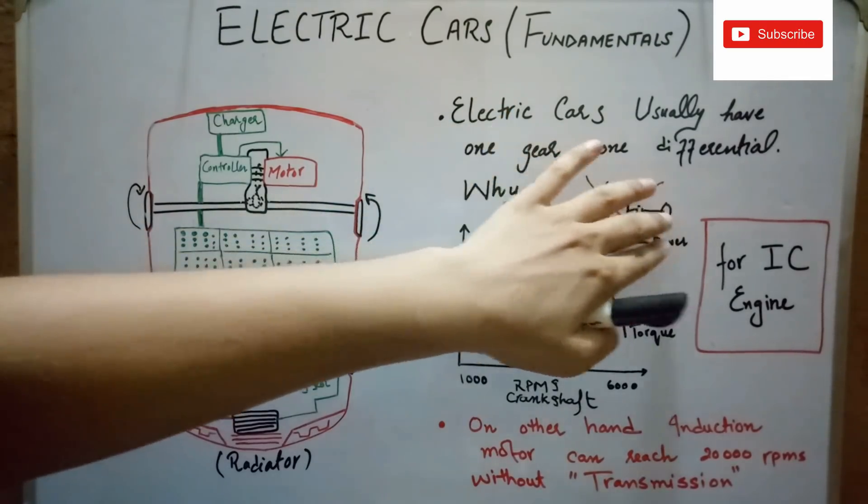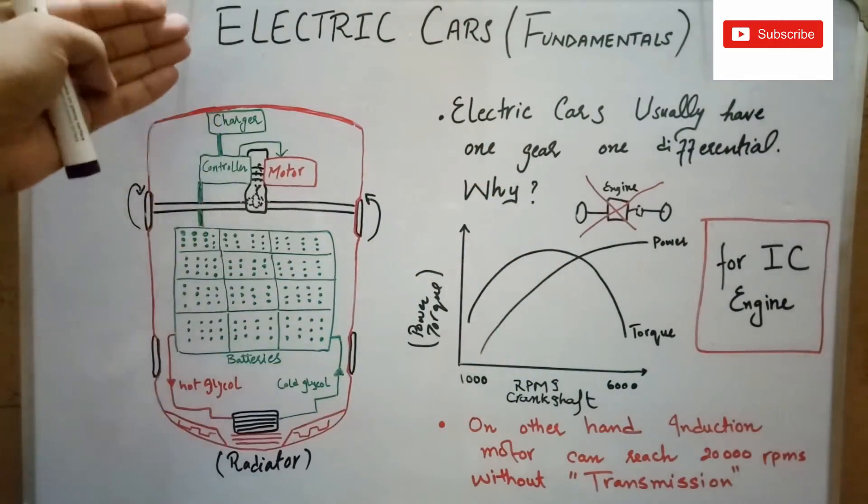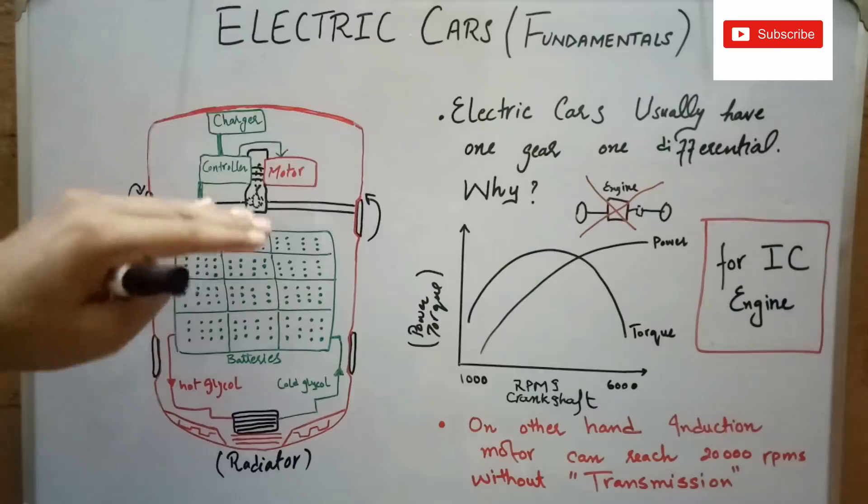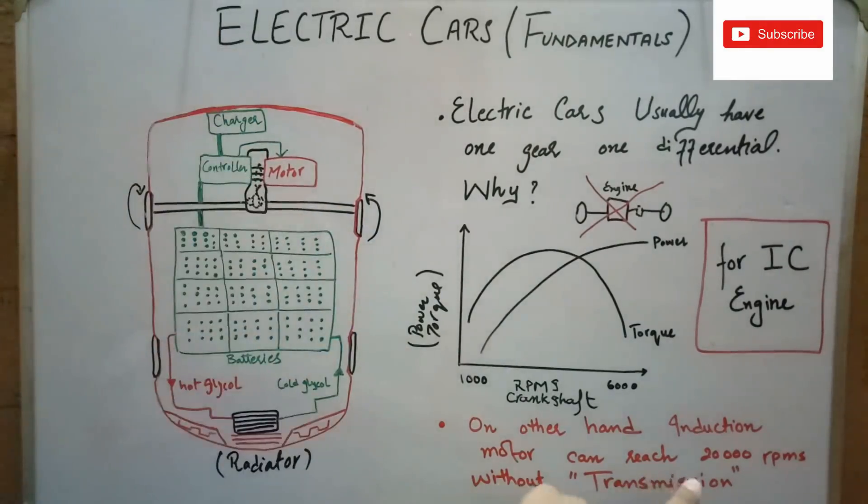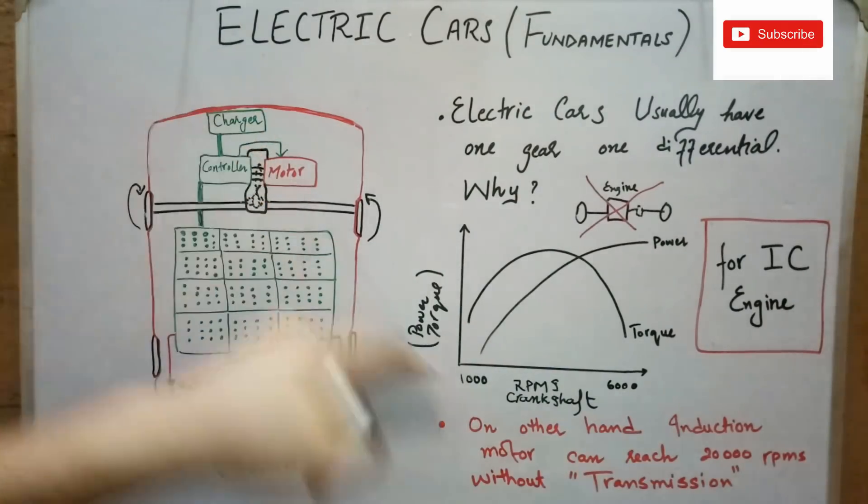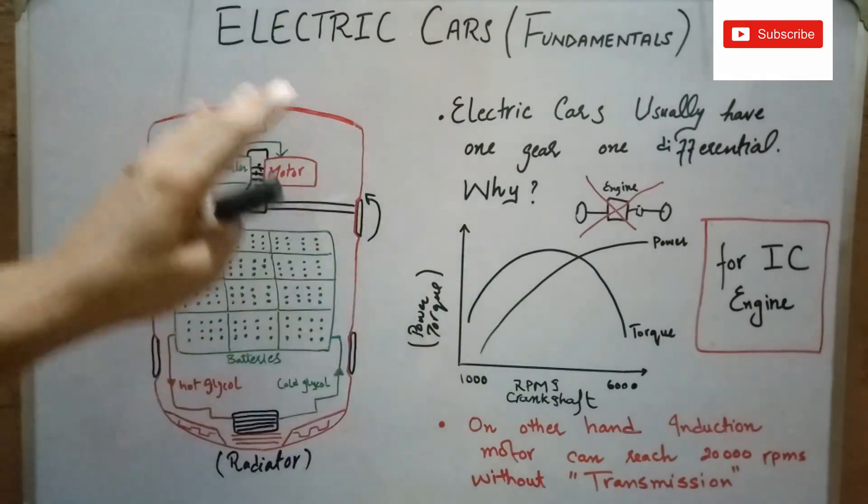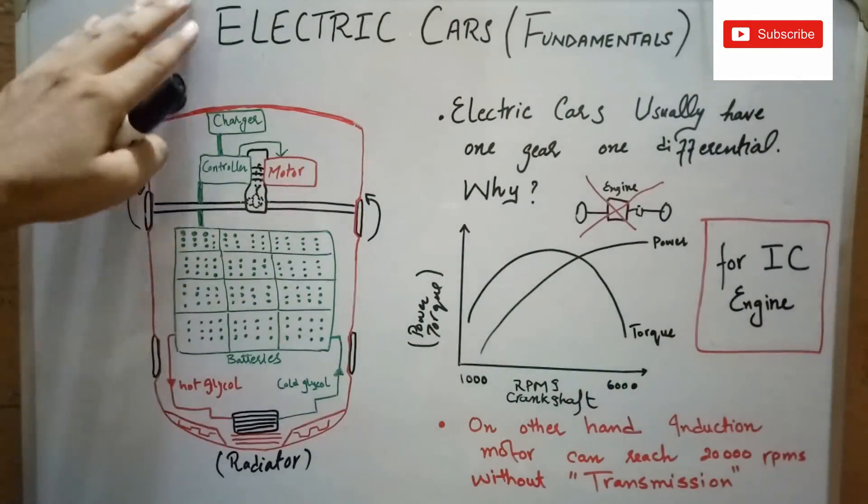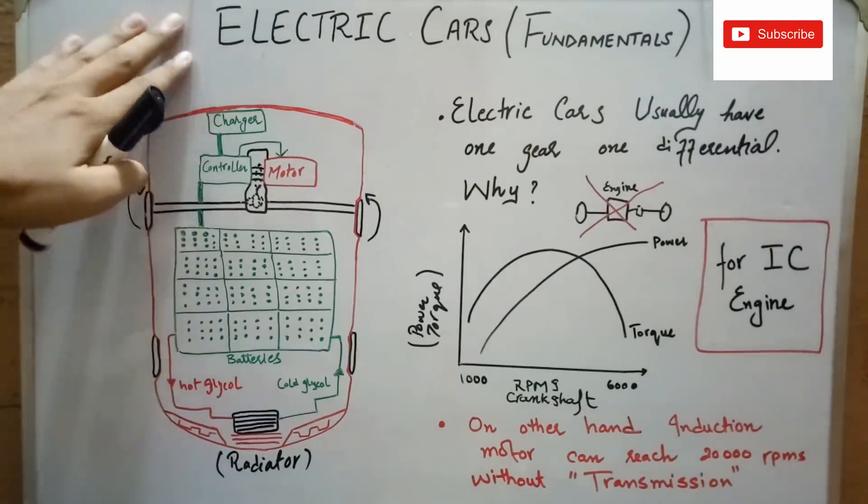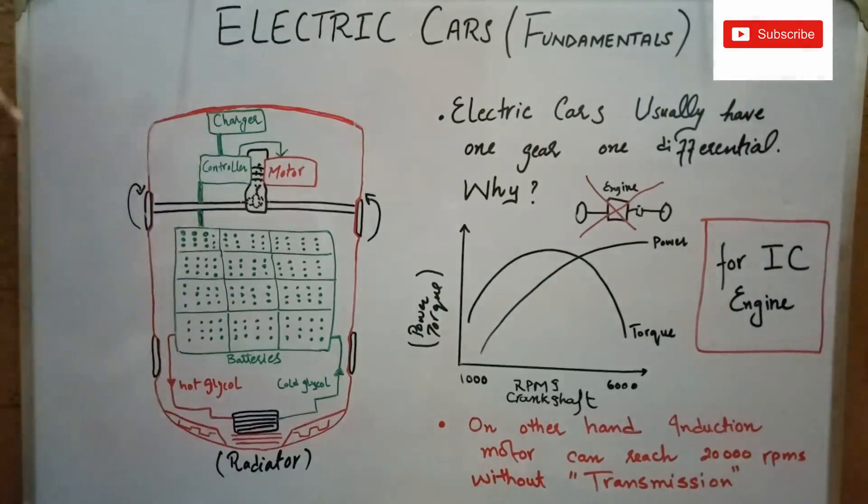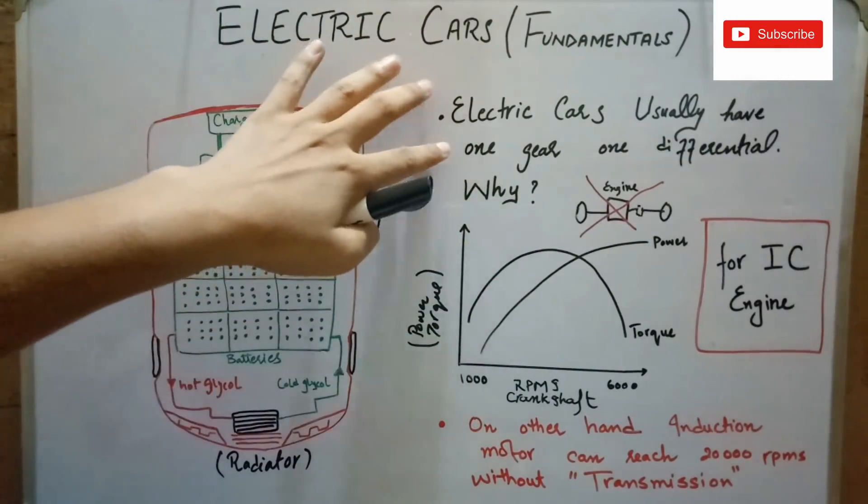But on the other hand, in electric vehicles we can put the motor directly with the help of one gear because the speeds of the induction motor can reach up to 20,000 RPMs. So that's why we don't require a conventional transmission system in any electric vehicle, and that's why electric cars only have one gear. And that's the same reason why gasoline engines have transmission systems.